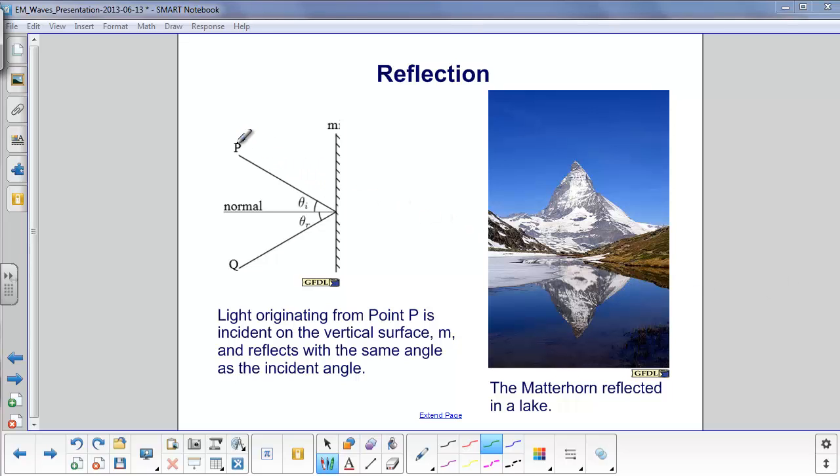Mathematically, we have light originating from point P, for example, from the sun or from the object, from the mountain. It hits a reflective surface and bounces off, and this is a pretty key line here.